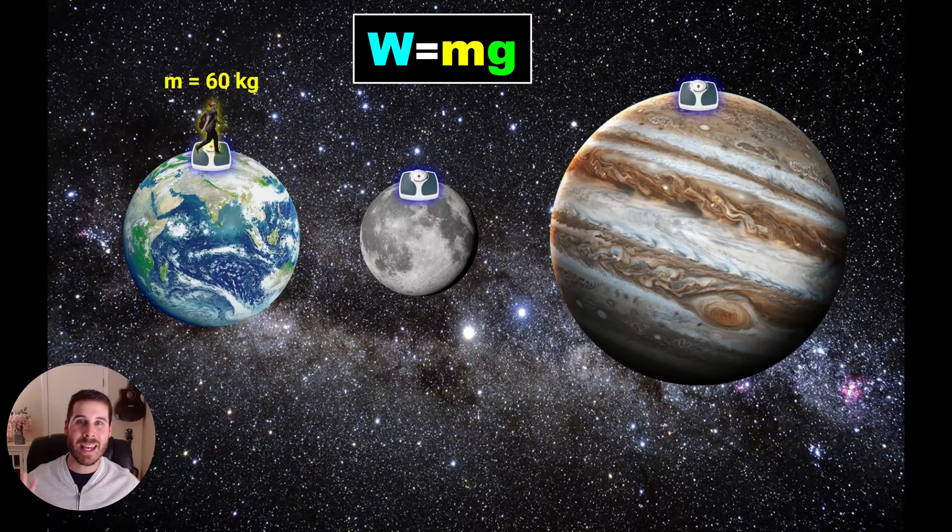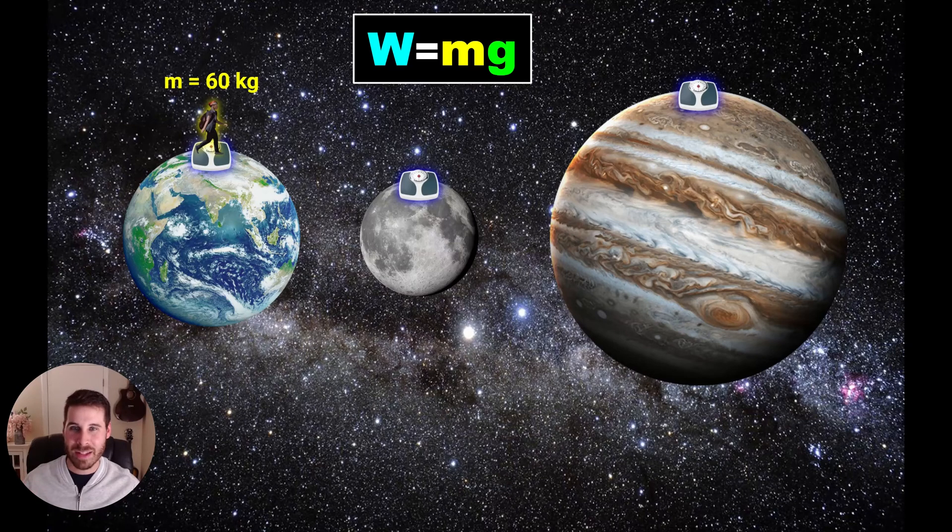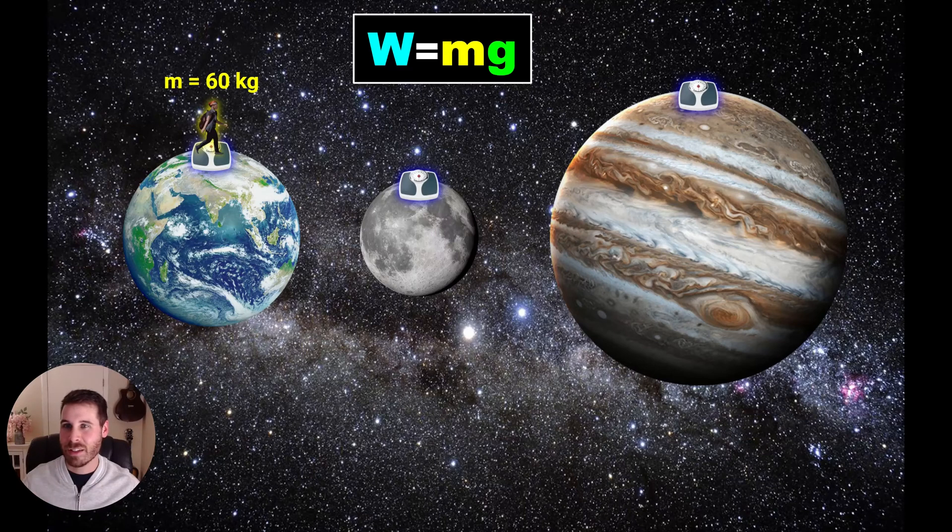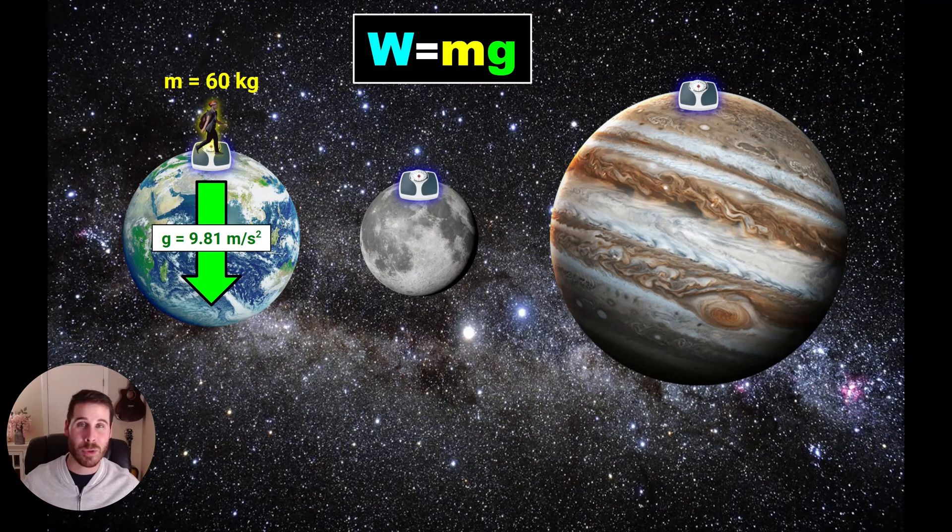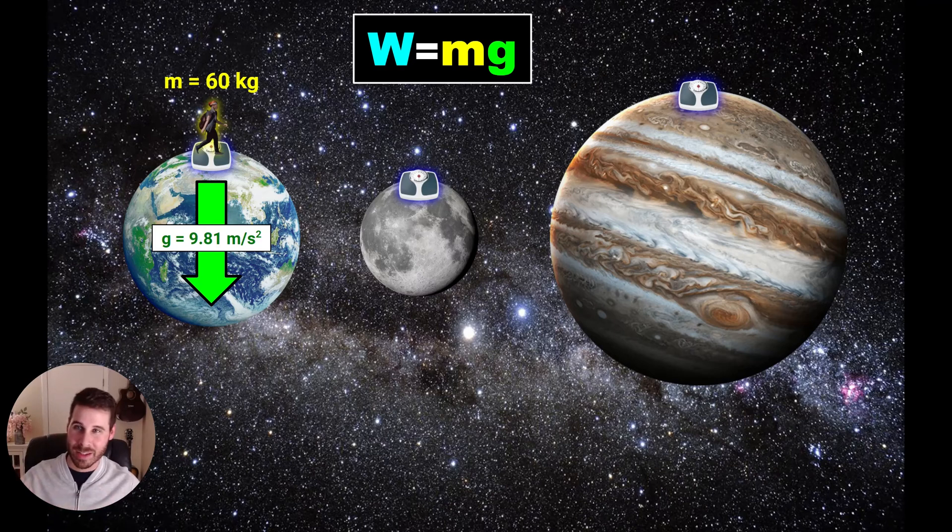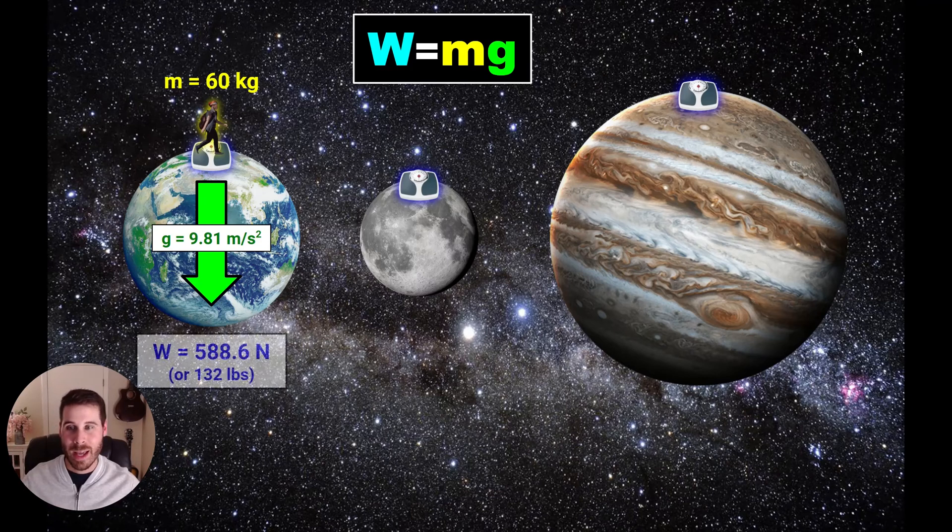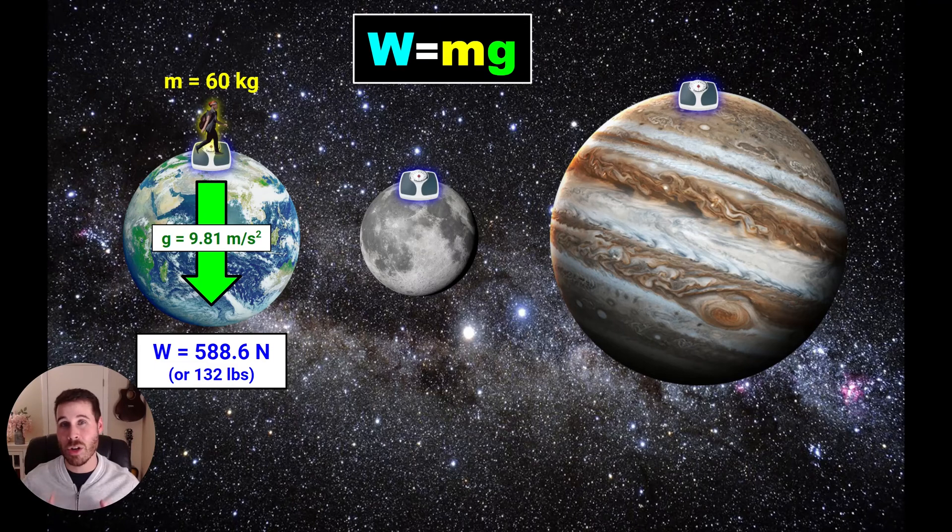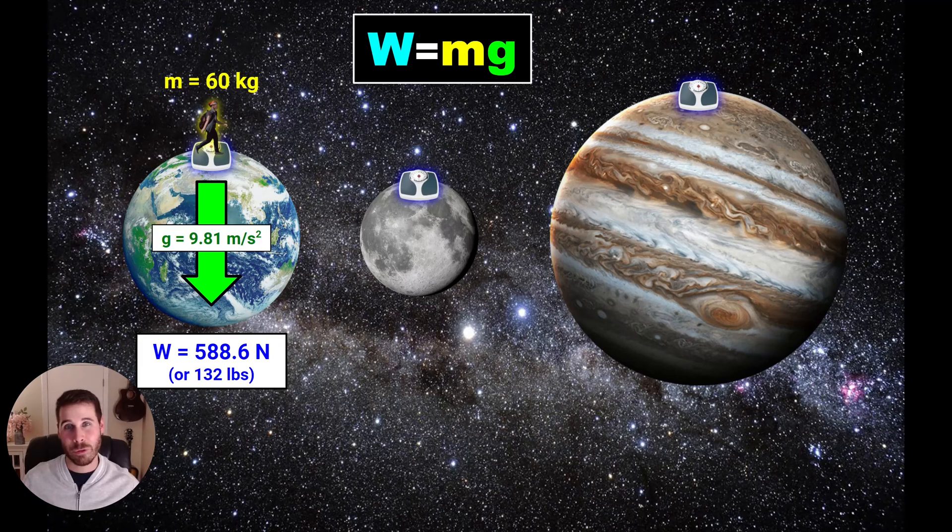So we're going to do kind of a thought experiment here. We're going to put a scale on each of these planets. And I'm going to plop a 60 kilogram person on top of that scale on each planet, and we'll see how their weight changes. So here's our mass of 60 kilograms on a planet that has an acceleration due to gravity of 9.81 meters per second squared. How much weight would this person have on this planet? Well, look at the equation, weight equals mass times gravity. So we'll take the 60 kilograms of mass, multiply it by the 9.81 meters per second squared of gravity. And multiplying those together, you get 588.6. So that number represents the newtons of weight that the person is going to be pulled down with as a result of gravity.